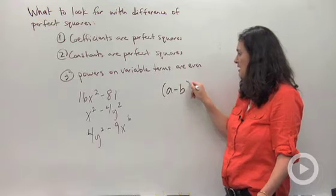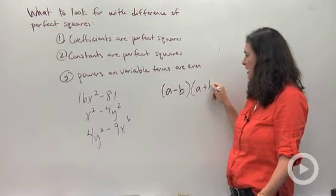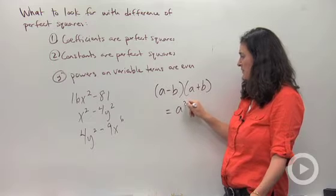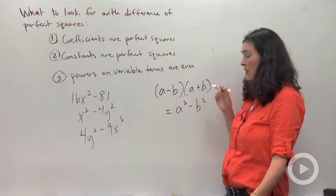(a - b)(a + b) = a² - b². a minus b times a plus b equals the difference of perfect squares, a squared take away b squared.